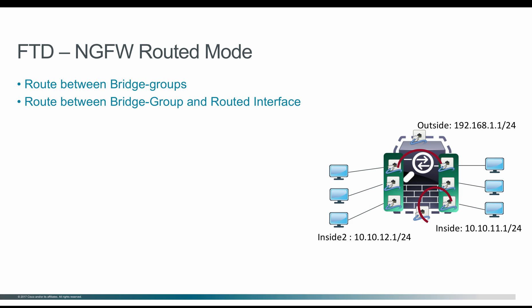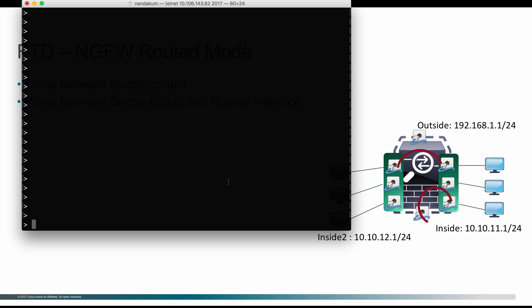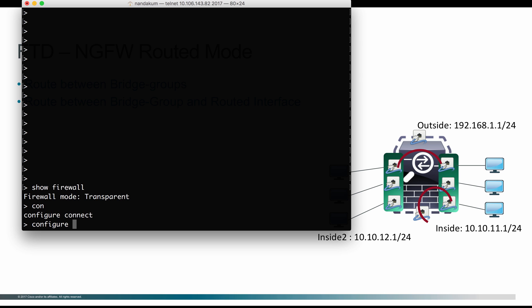Next, we will take a look at an example of how to configure routed mode on FTD and then use FMC to configure interfaces. I have this Firepower Threat Defense running on a Firepower 2130. Let's check which mode it is in now. The show firewall command shows that it is in transparent mode. I am going to change this to routed mode using the command: configure firewall routed.